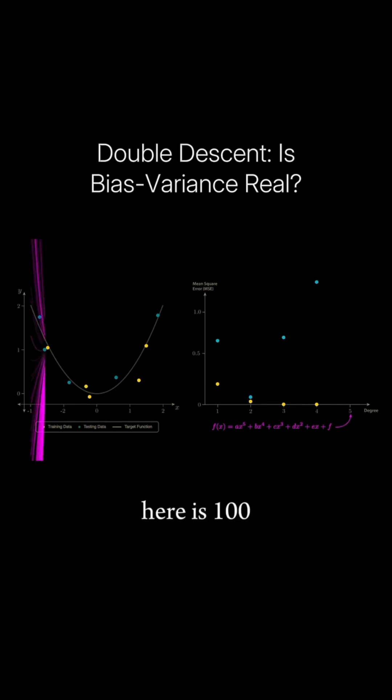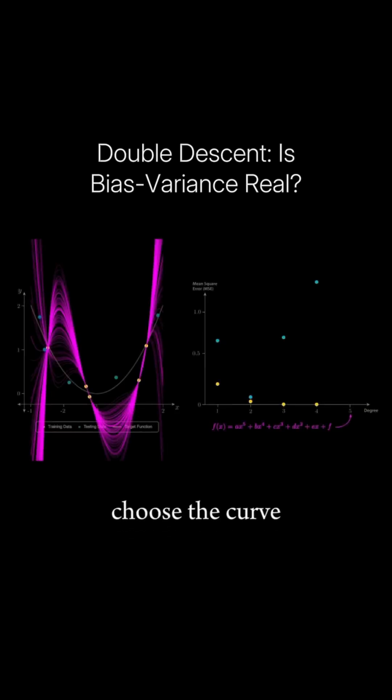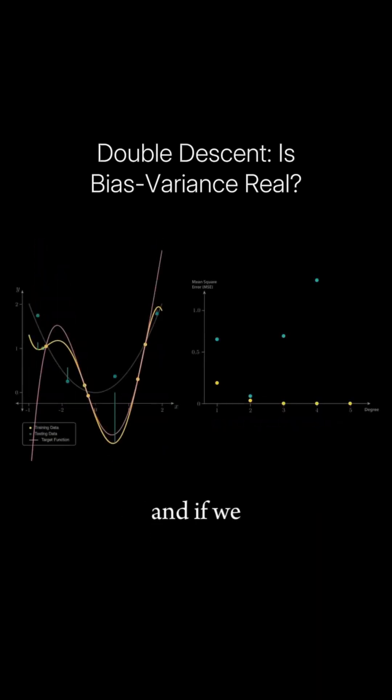Here's 100 different fifth order polynomials that perfectly fit our data. The solver will effectively choose the curve with the smallest sum of squared coefficients. And if we measure its test set error, we see that it's actually lower than our fourth degree polynomial's test set error, starting to create double descent behavior.